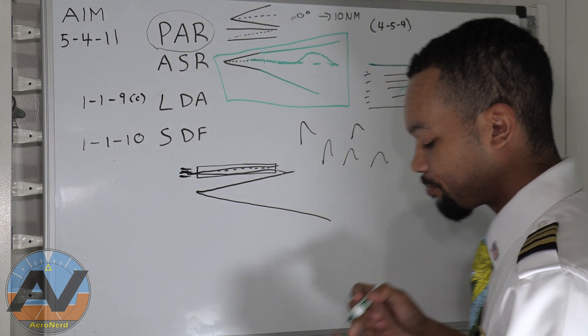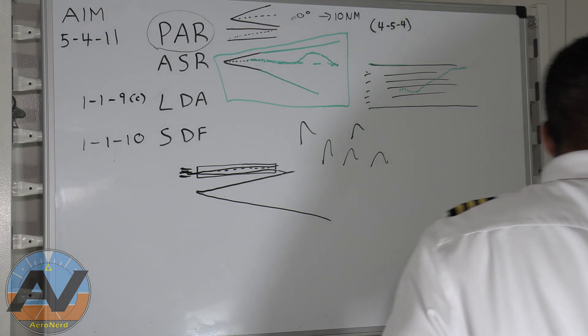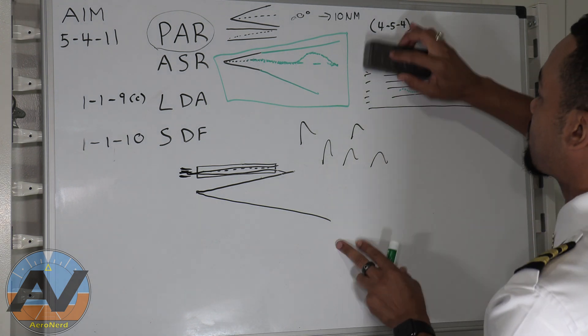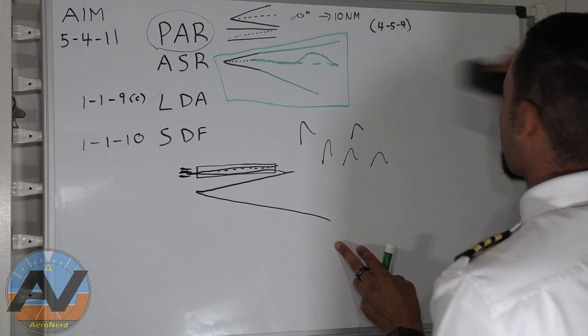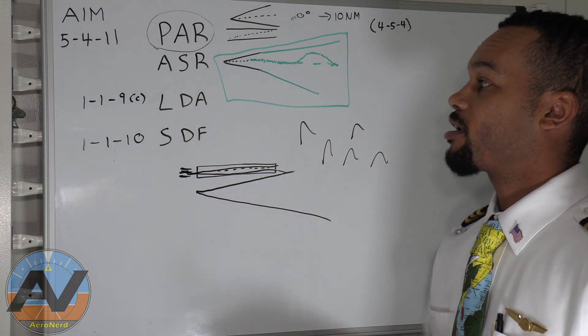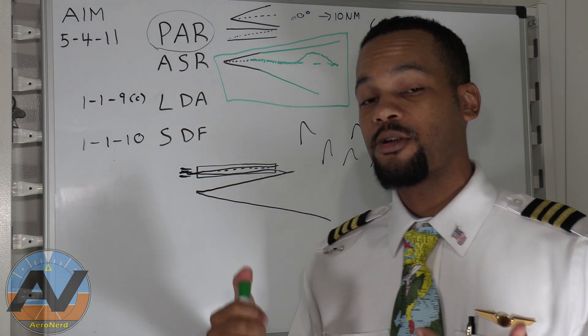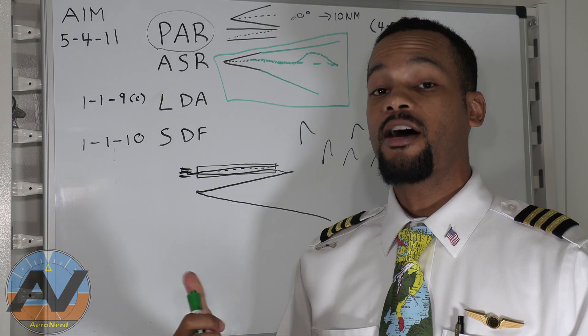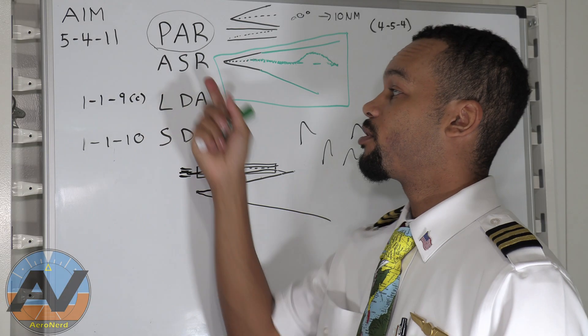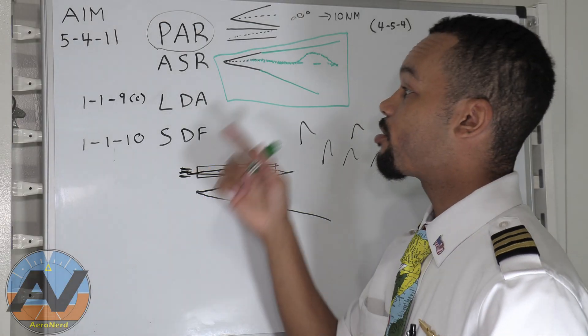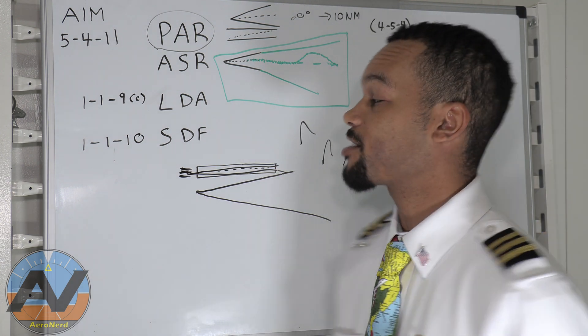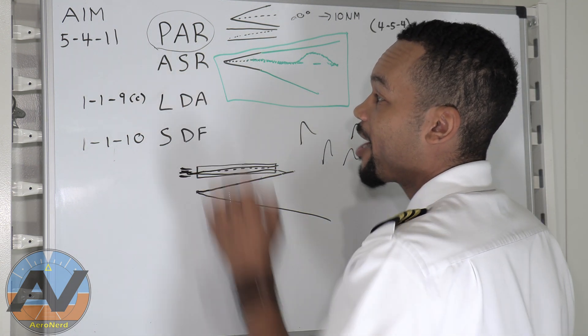Now, approach surveillance radar is the same exact thing, except you don't have this right here. And actually, if you look on Daytona Beach approach plates, you'll actually see in the notes, you'll see a small little ASR. So they actually provide approach surveillance radar.